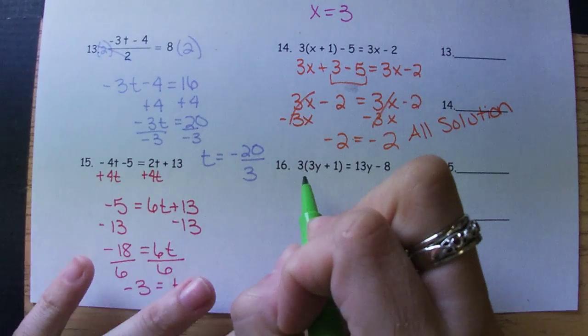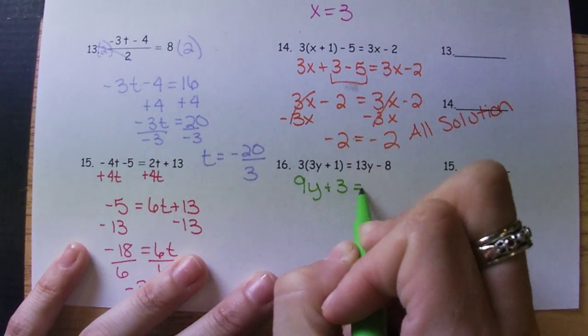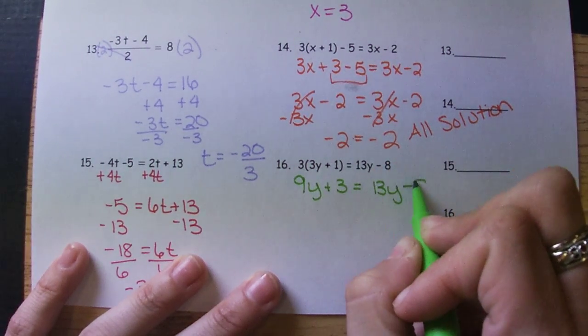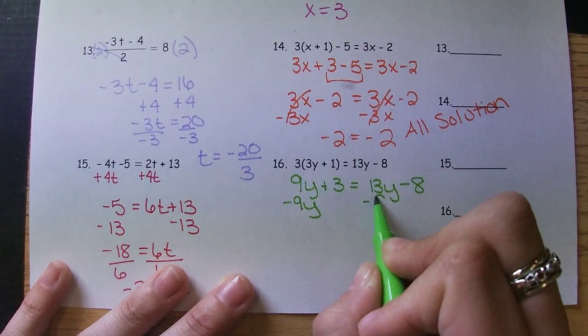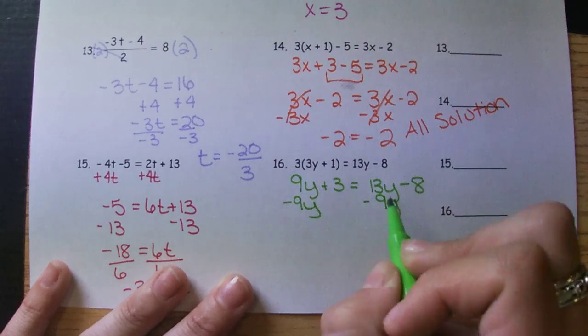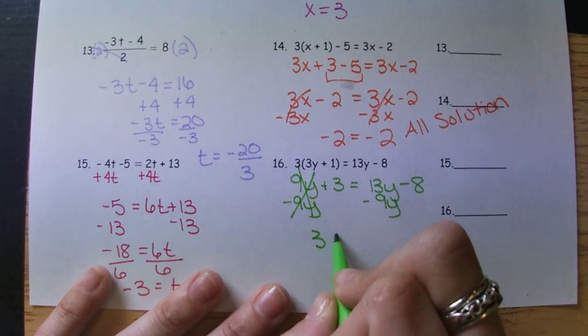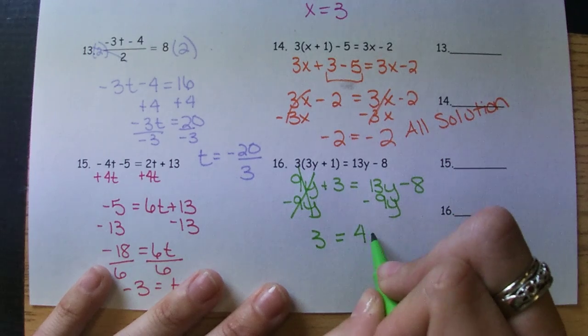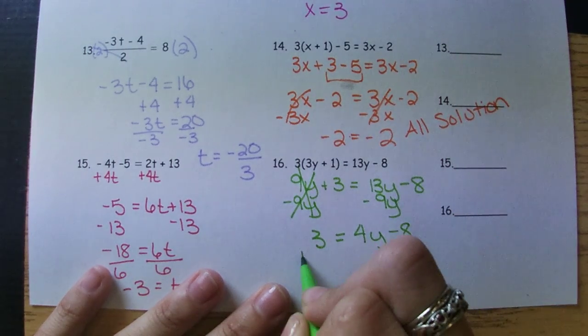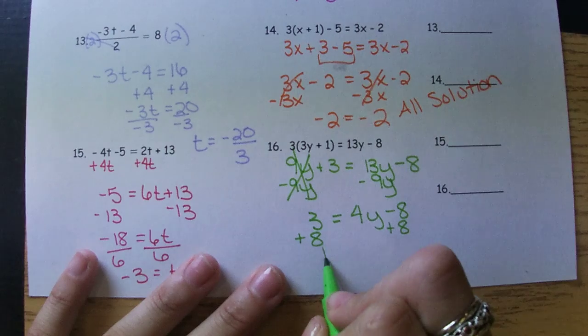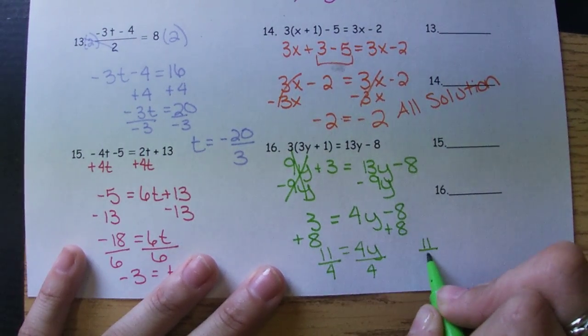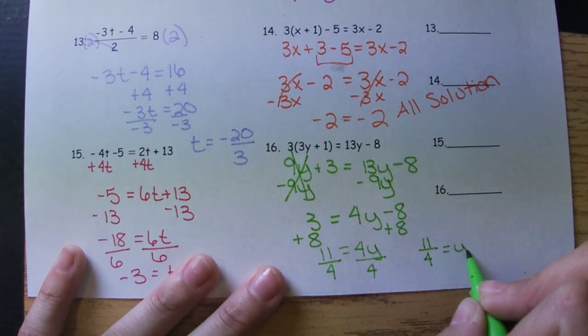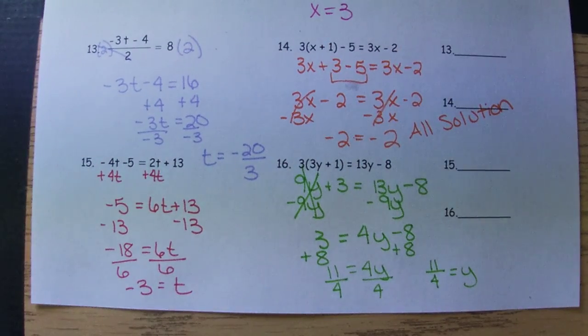For 16, we'll distribute first. We have variables on opposite sides. I'm going to move the 9Y because it's smaller. If we're going opposite sides of the equal sign, we have to move it with the opposite sign. So we'll get 11 over 4 equals Y. You could have that as 2 and 3 fourths or 2.75 as well.